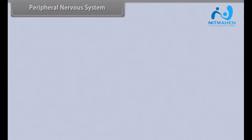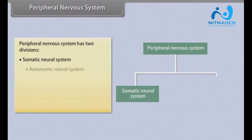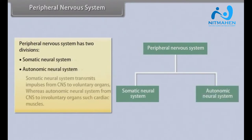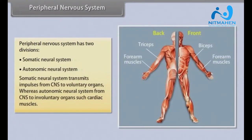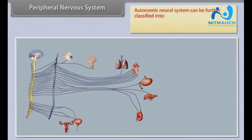The peripheral nervous system has two divisions: the somatic neural system and the autonomic neural system. The somatic neural system transmits impulses from the CNS to voluntary organs, whereas the autonomic neural system transmits from the CNS to involuntary organs such as cardiac muscles. The autonomic neural system can be further classified into the parasympathetic neural system and the sympathetic neural system.